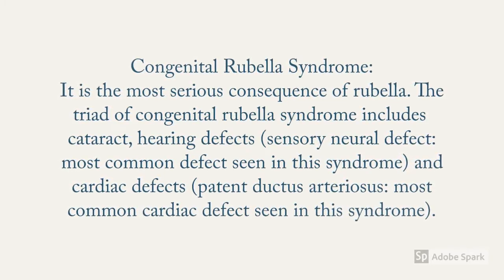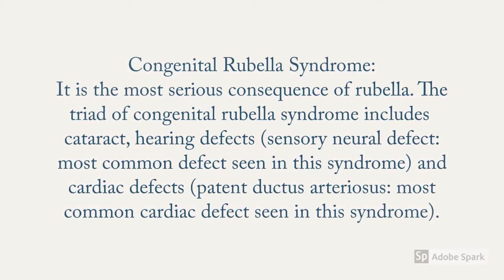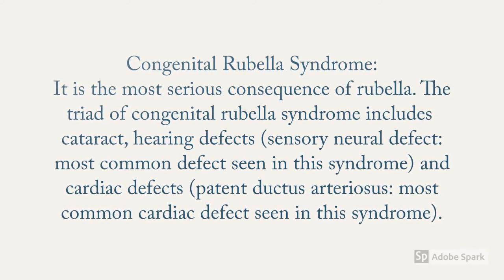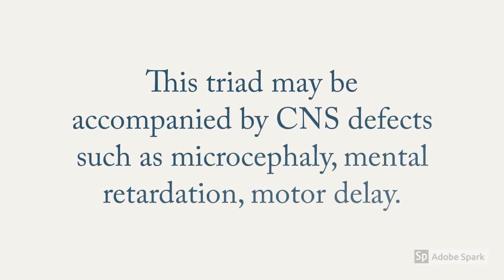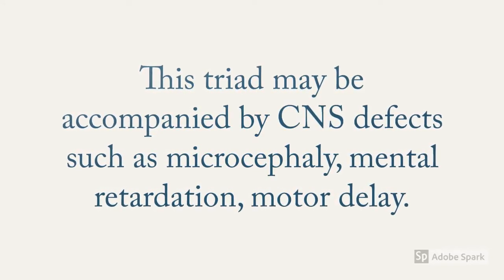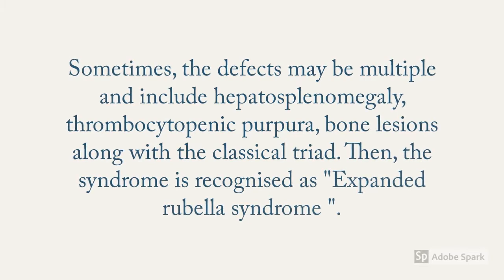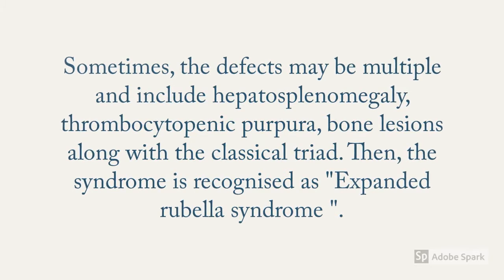The congenital rubella syndrome consists of a triad of cataract, hearing defect, and cardiac defect. Sensorineural hearing loss is the most common hearing defect, while patent ductus arteriosus is the most common cardiac defect. The triad may also be accompanied by CNS defects such as microcephaly, mental retardation, or motor delay.